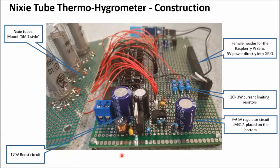So here you see the construction of the printed circuit boards. The Nixie tubes, mounted SMD style. Then here you have the 170 or 180 volt boost circuit. Please make sure you get this kind of drum choke. These work the best. Then here is the 9 to 5 volt regulator circuit. The LM317 you cannot see because it's placed to the bottom, so the heat can go out on the bottom and will not affect the temperature measurement. Here you have the 3 watt, 20K current limiting resistors. A female header for the Raspberry Pi Zero. The Raspberry Pi is directly powered from the GPIO. So 5 volt is supplied via this female header.